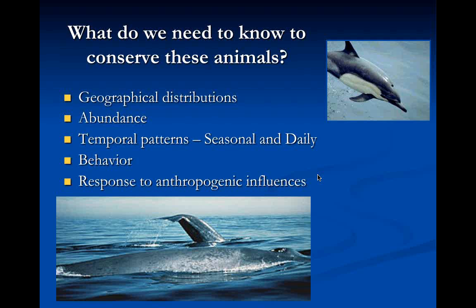First, we just need to know where they are distributed — their location around the planet. How many are there? What are the patterns of their behavior, either seasonally as they migrate or daily as they go through cycles of foraging, resting, or socializing? More details of their behavior as individuals or as a group. Ultimately, we'd like to say what the impact is of things people are doing — making sound, using vessels, discharging toxics — and how those impact the animals. That's a feedback to help us protect them by being sensitive to how those activities affect marine mammals.